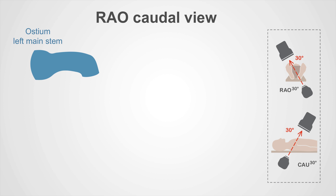The left coronary artery joins the aorta, and this is a very important area for the formation of disease or stenosis. The left main stem also has a midsection, sometimes referred to as the body of the left main stem, and the crucial area where it divides into the LAD and the circumflex vessel is referred to as the distal left main stem.